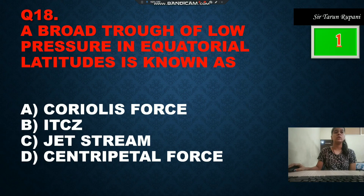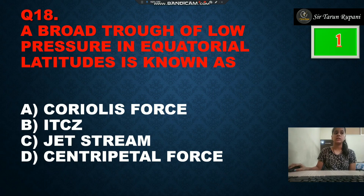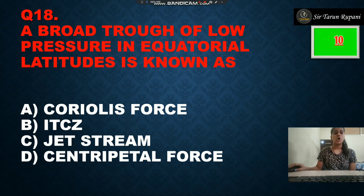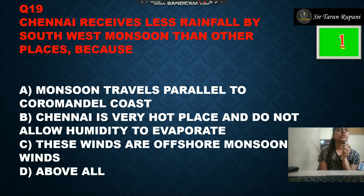A broad trough of low pressure at equatorial latitudes is known as — option A is Coriolis force, option B is ITCZ, option C is jet stream, and option D is centripetal pressure. The timer is up and our correct answer is ITCZ, option number B.